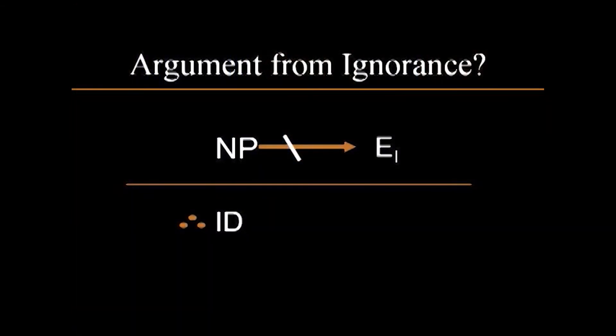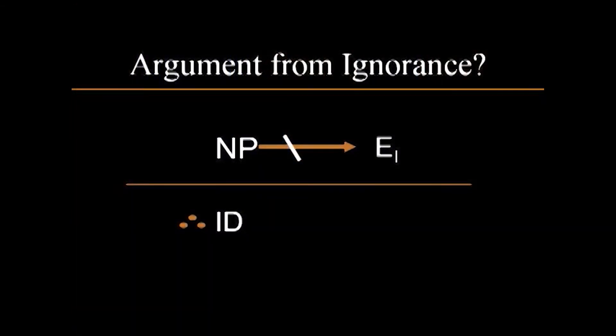He's claiming that what we are saying is simply that we don't know of a cause, therefore it must be intelligently designed. We don't know of a naturalistic process — which I represent on the slide with the symbol NP — that can produce the effect in question, which we represent with the symbol E. Since we don't have a natural process that can produce the effect in question, therefore it must be this mysterious thing called intelligent design.